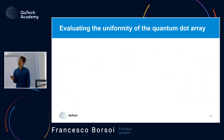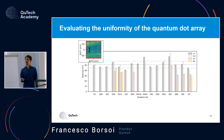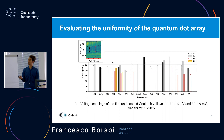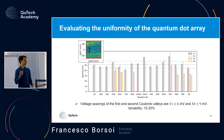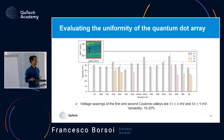We examine the uniformity of the array by measuring the spacing between consecutive Coulomb peaks — essentially the addition energy — for all 16 dots. The spacing is 51 ± 6 mV for the first hole and 50 ± 9 mV for the second hole. This means the quantum dots are uniform to within a 10–20% variation relative to their total addition energy — the dots are effectively twins.